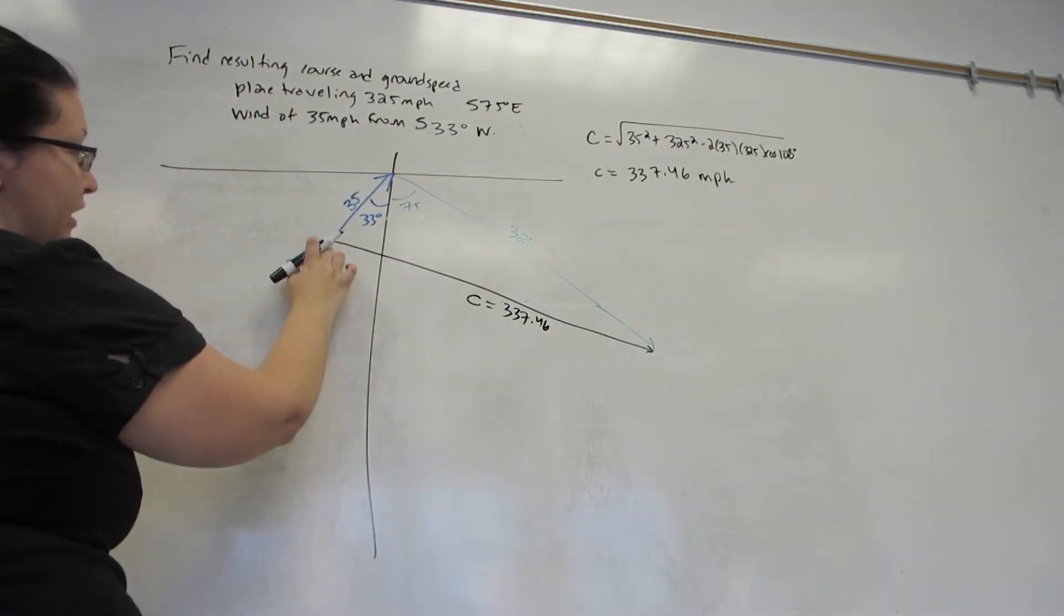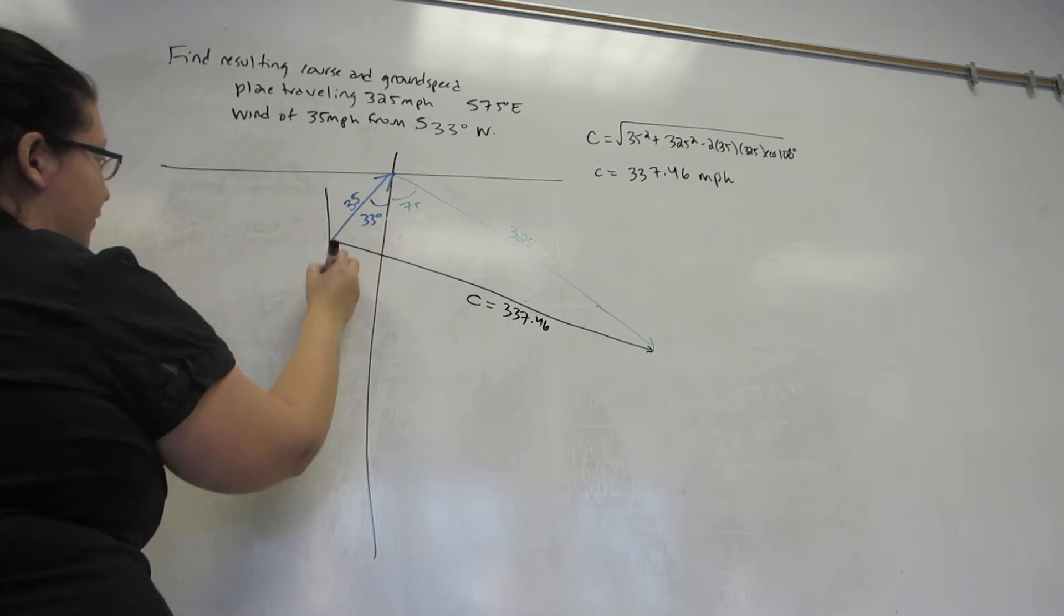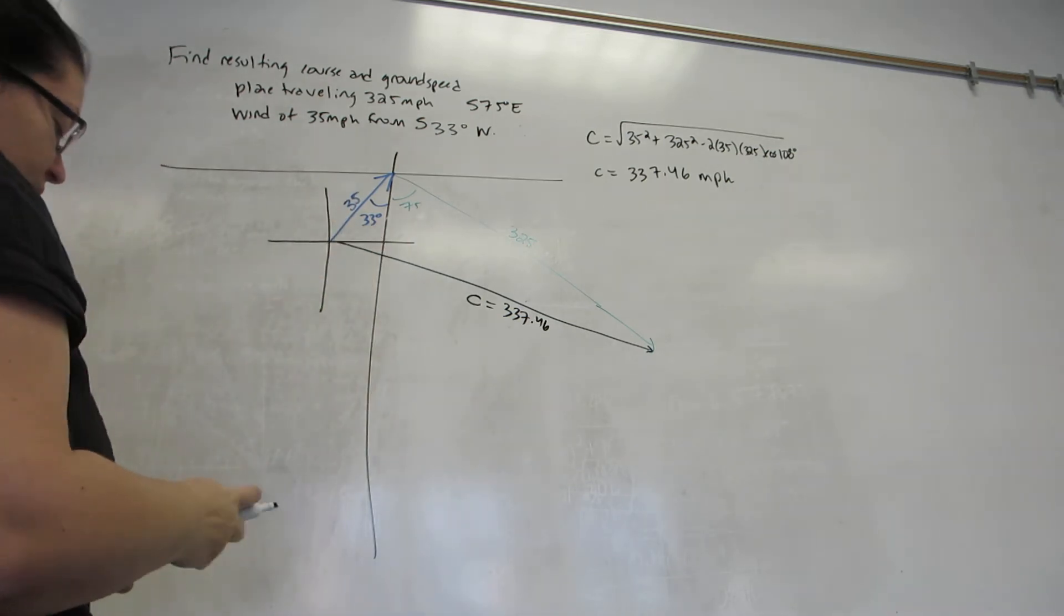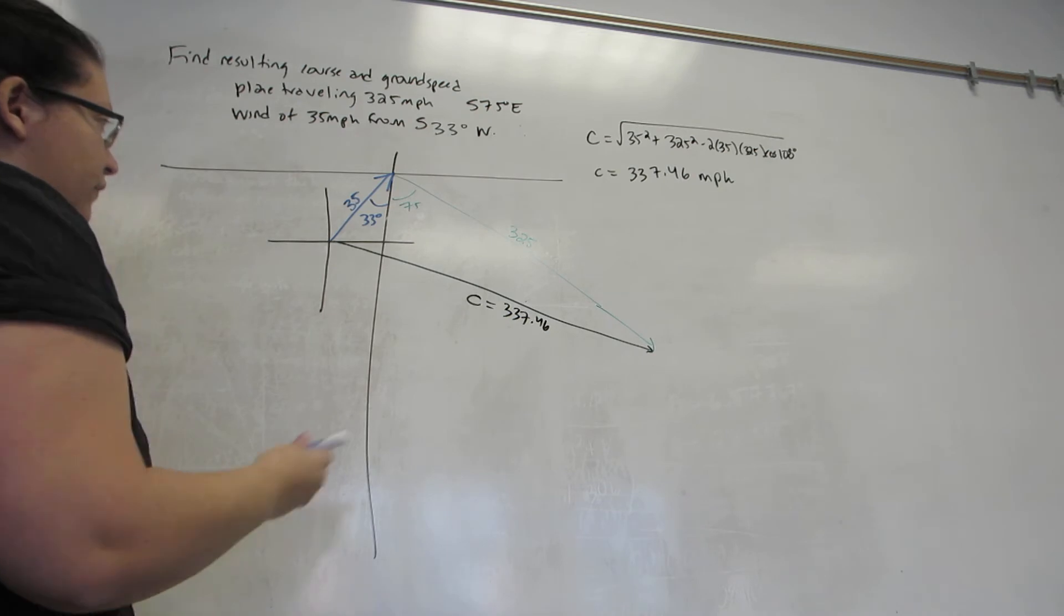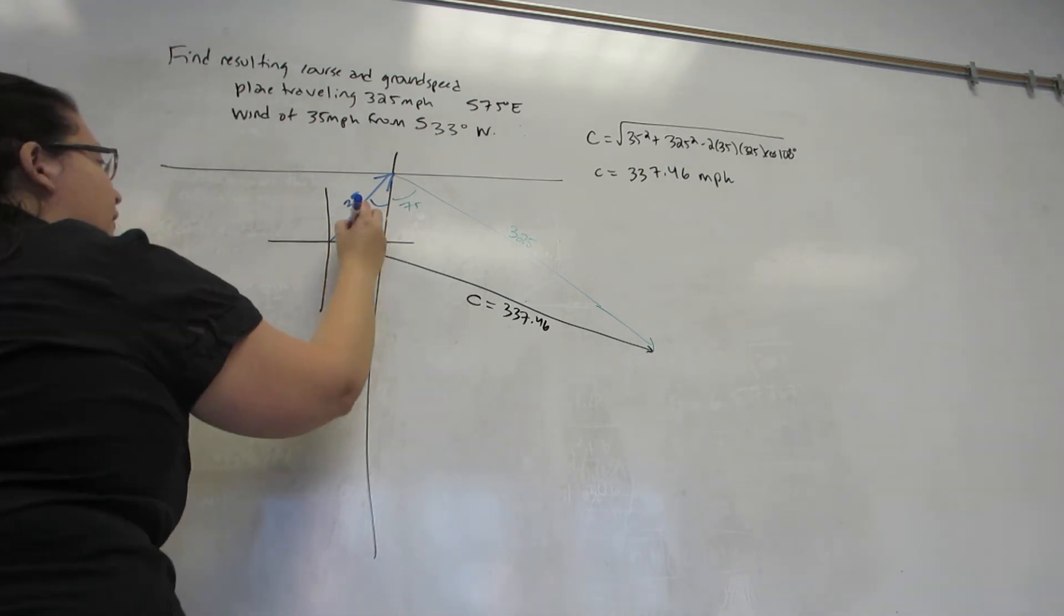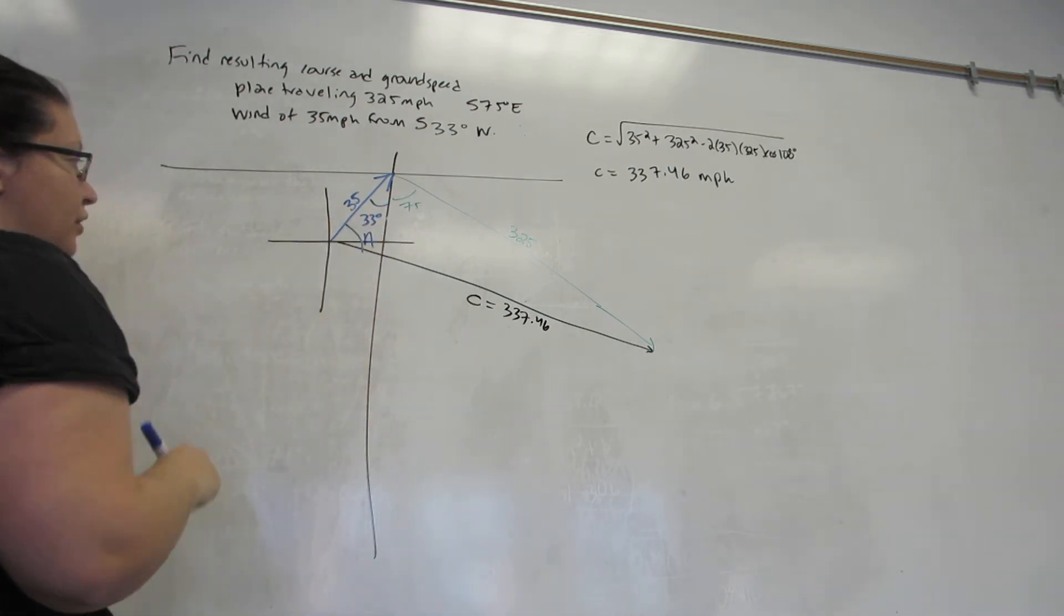So I'm going to the tail of the vector I want the bearing of, drawing a new set of coordinate axes. First of all, I want to find this angle of the triangle, which we'll call A.